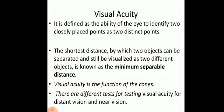We will start with visual acuity. Visual acuity is defined as the ability of the eye to identify two closely placed points as two distinct points. The shortest distance by which two objects can be separated and still be visualized as two different objects is known as the minimum separable distance. Visual acuity expresses the resolving power of the eye — the extent to which the eye can perceive the details and contours of an object.